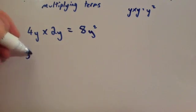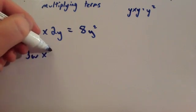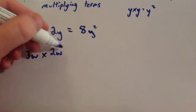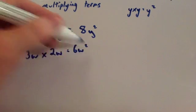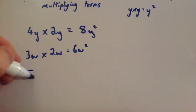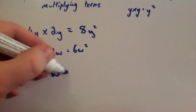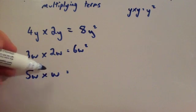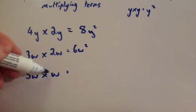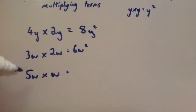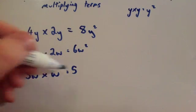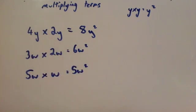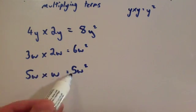Likewise, if you had 3w times 2w, again 3 times 2 is 6, and w times w is w squared, giving 6w squared. If you had 5w times w, there's technically a 1 in front of the second w, so 5 times 1 is 5 — the number stays the same — and w times w is w squared again, giving 5w squared.